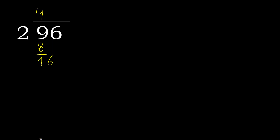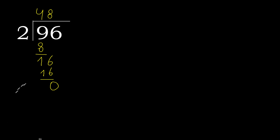Next: 16. 2 multiplied by 8 is 16 — is not greater. 16 minus 16 is 0. The remainder is 0, so we finish here.